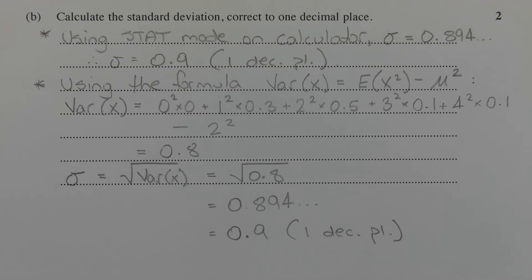There are two ways we can work out part B. In the first way, we can use the stat mode on your calculator to enter the data from the table and then calculate the standard deviation directly. In this case, we get sigma is equal to 0.894 and so on, which rounds to 0.9 correct to one decimal place.